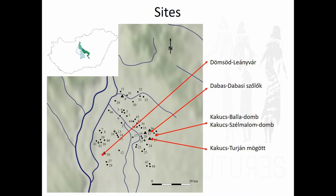These are the sites that are, so to say, under the microscope: Dömsöd Lányvár, Tabass-Szőlő, two from Kakucs very close to each other, and of course the already mentioned Kakucs-Turján, which is really in the focus of an international cooperation, and I'm also going to talk more about this one in this presentation.